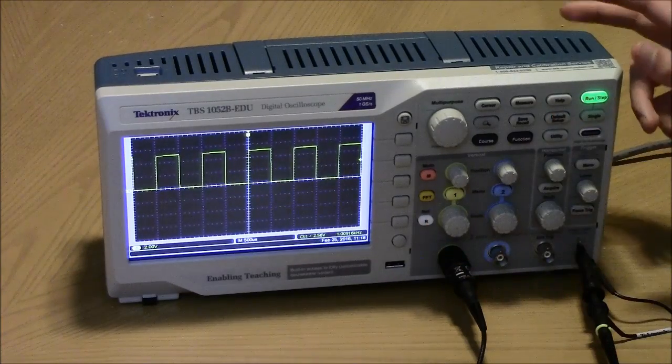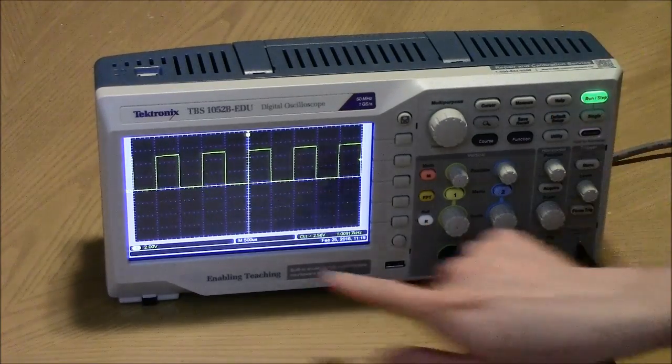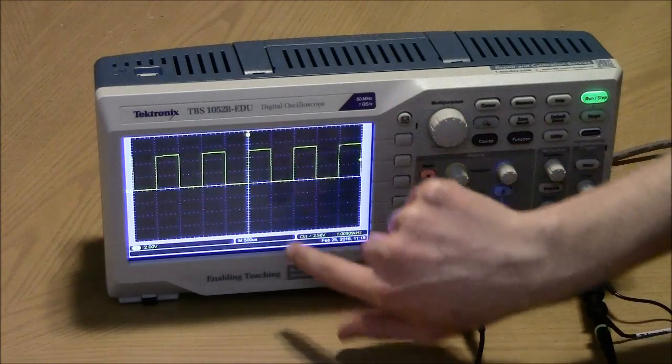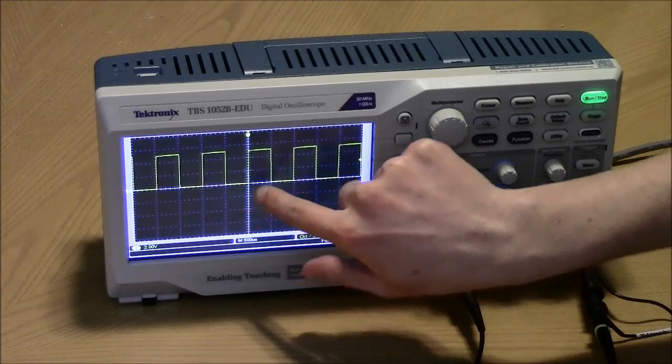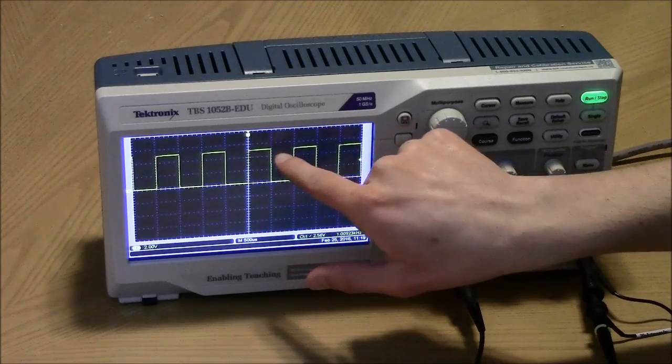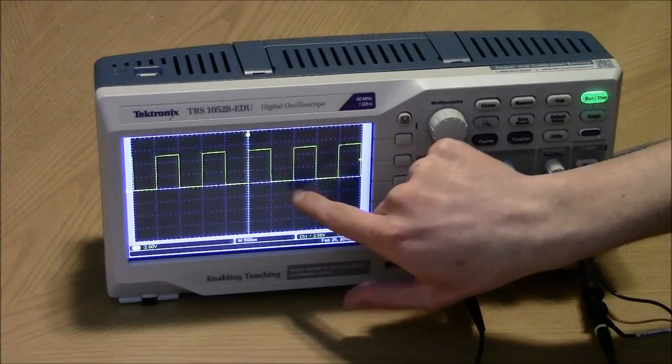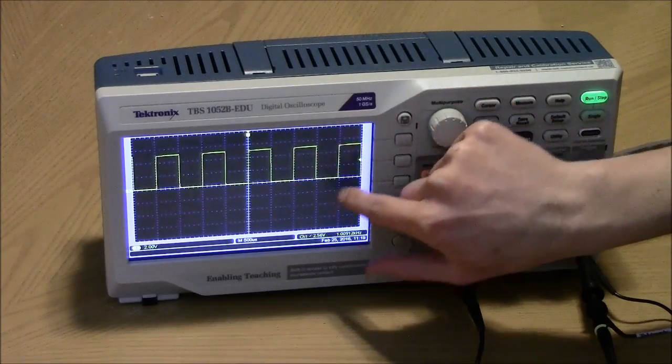This is the square wave that the machine is outputting. This axis is time and this axis is voltage. So here you can see that it outputs a high voltage, five volts to be specific, for a certain amount of time. Then zero volts for a certain amount of time, five volts, zero volts.